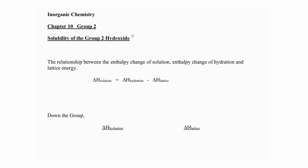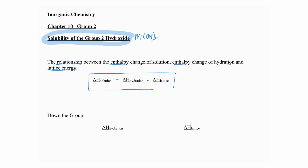The very first topic is the solubility of Group 2 hydroxides, M(OH)₂. We need to know the relationship between enthalpy change of solution, enthalpy of hydration, and lattice energy. We have the equation: enthalpy change of solution equals enthalpy change of hydration minus lattice energy. We actually learned all three of these in Chapter 5, Chemical Energetics.